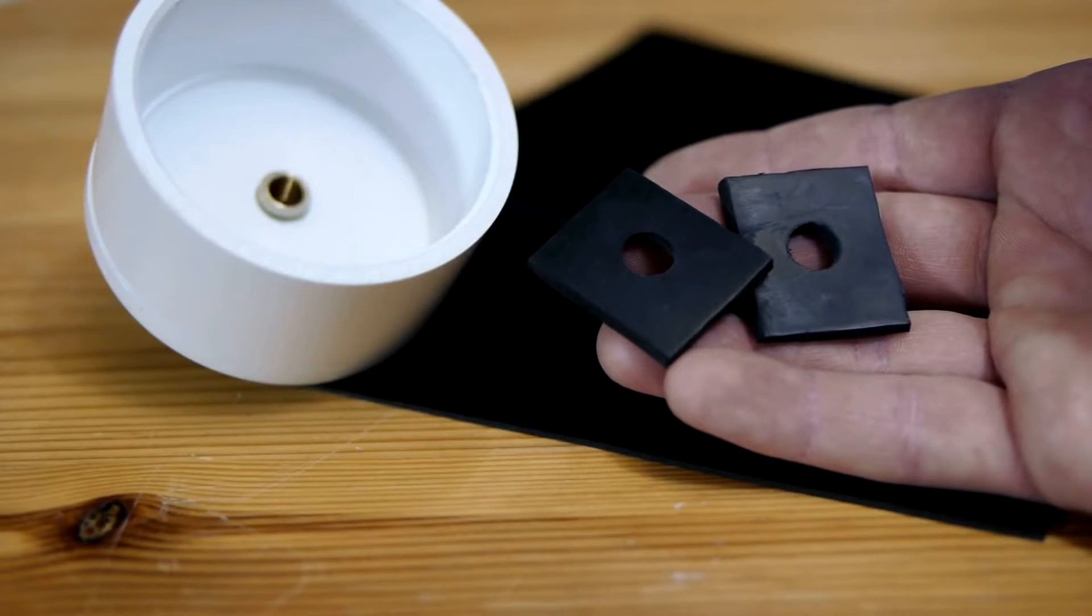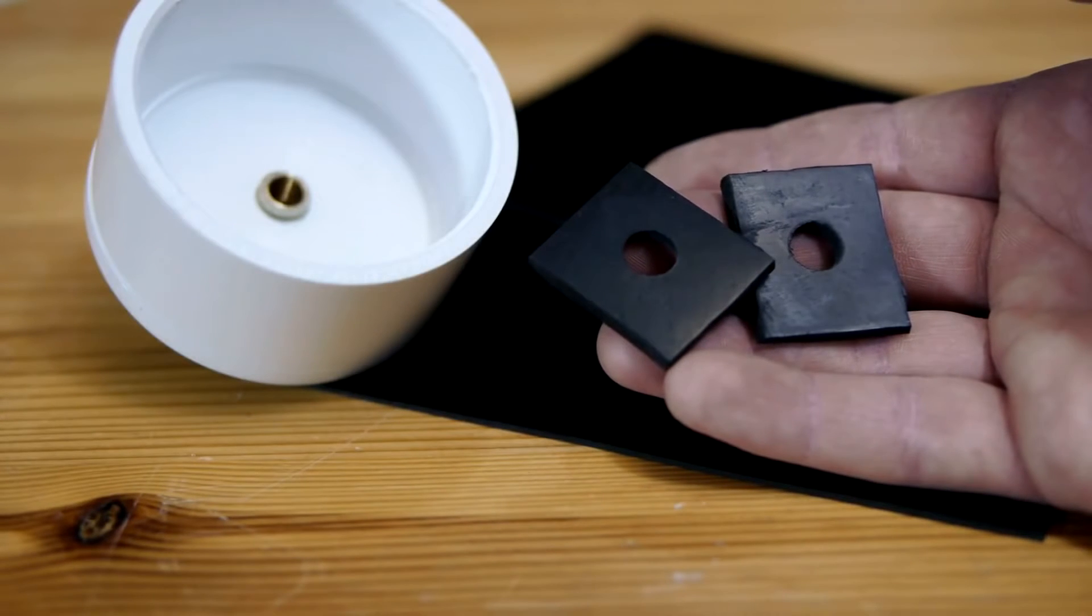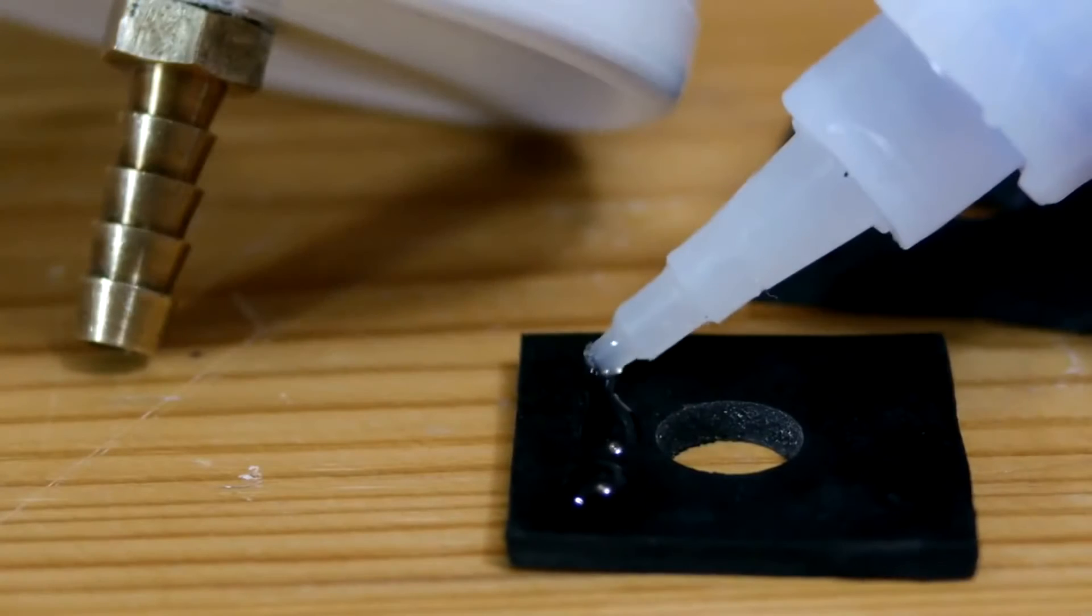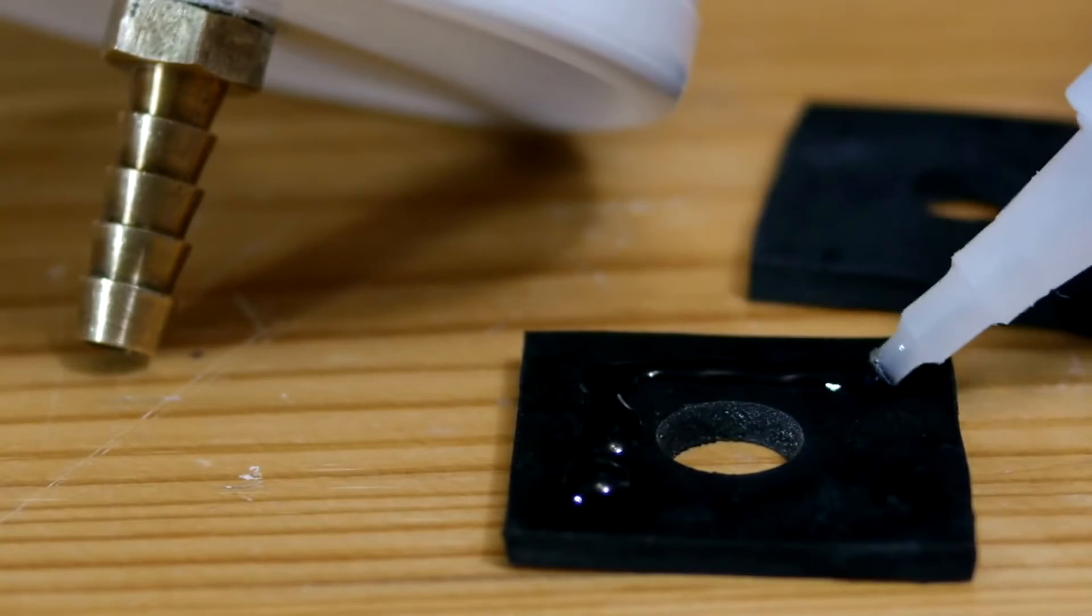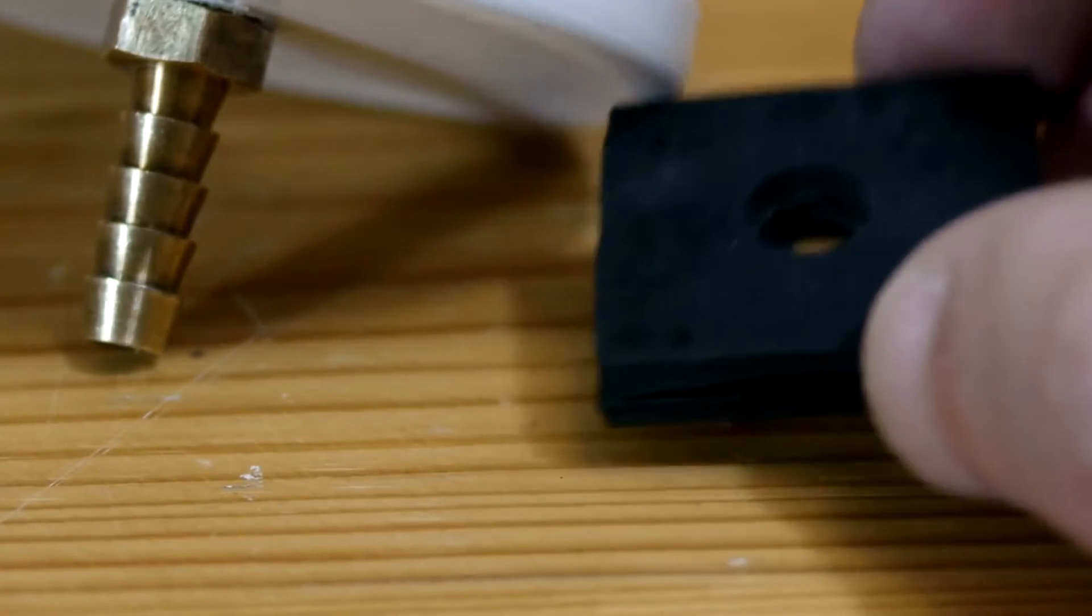Two pieces of 1/10 inch thick sheet rubber are given a hole in the center to fit over any of the threads on the fitting that might be coming through the cap. They are then superglued together to make up the base of the valve.